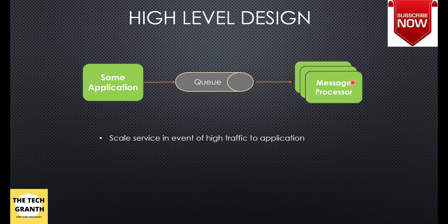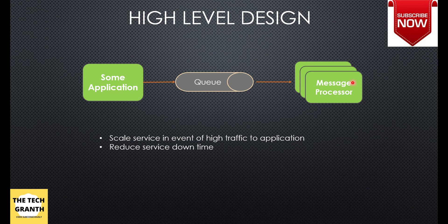These details form a contract between the application and the message processor and can be customized. For design considerations, we should ensure the service can scale when there is a lot of traffic — for example, on a system like BookMyShow on Fridays or weekends there are many ticket bookings. You should be able to send notifications to all those users, reduce service downtime so tickets are sent as soon as possible, and load-balance to distribute processing.